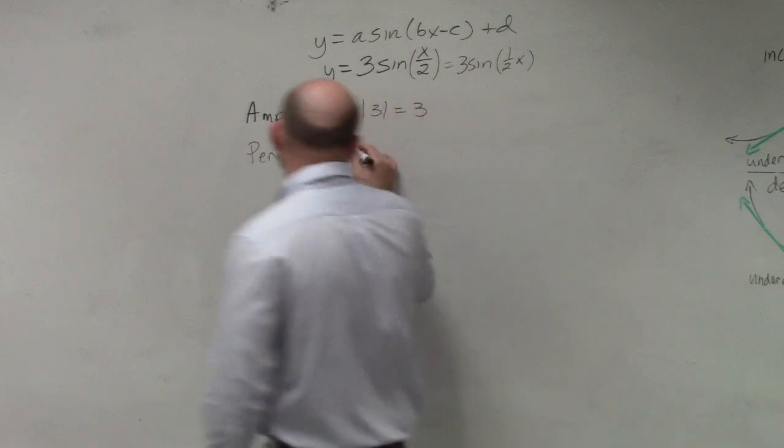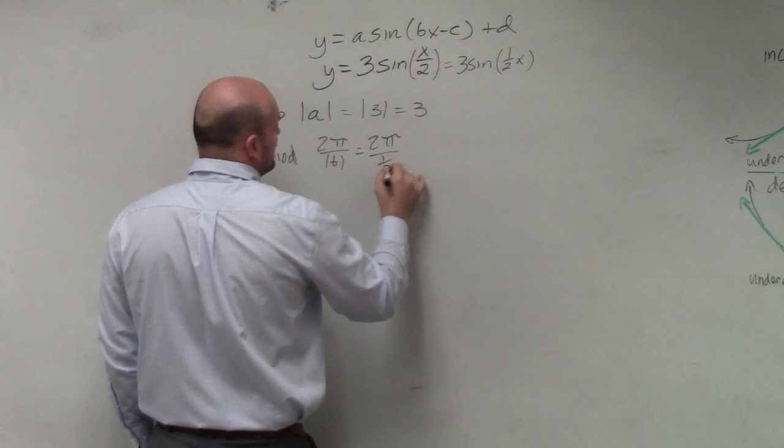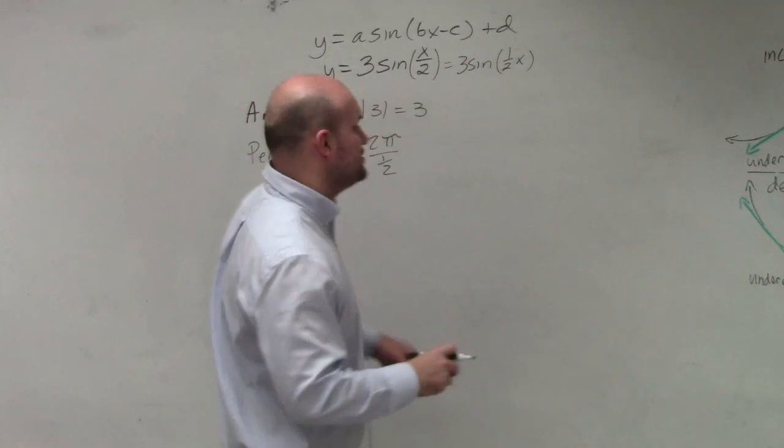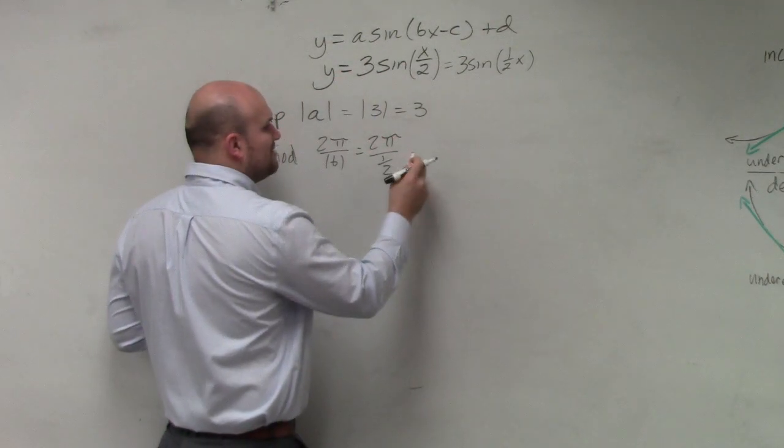So therefore I could say this is 2π divided by 1/2. Now, whenever we have a number divided by a fraction, we know we can get rid of the fraction by multiplying by it.